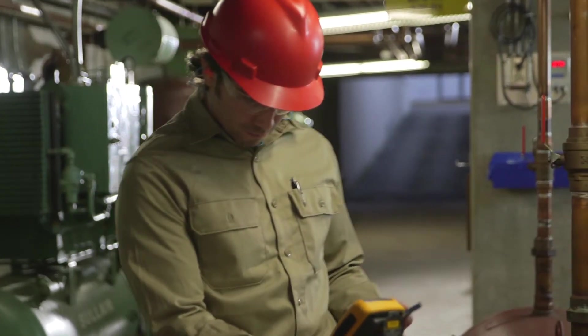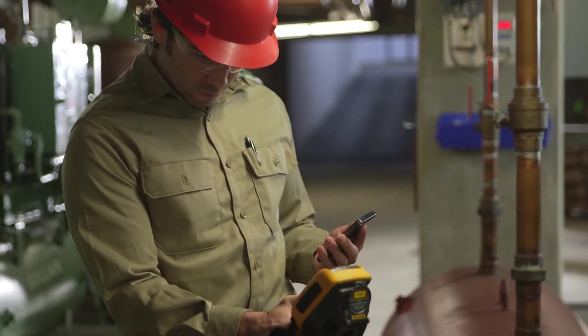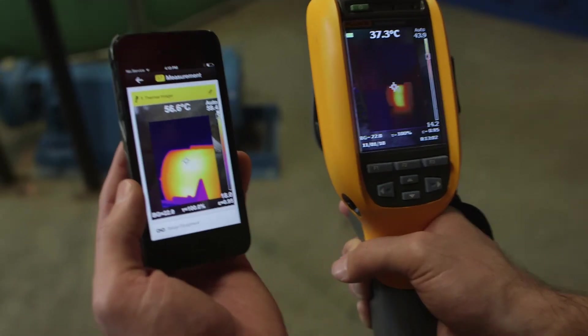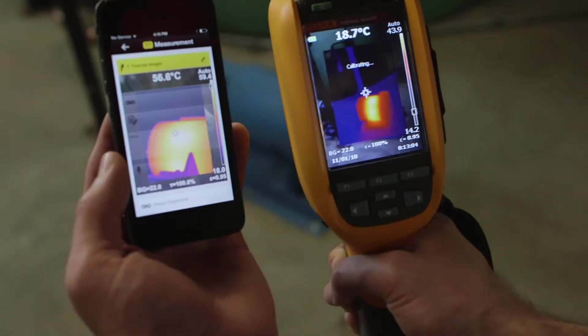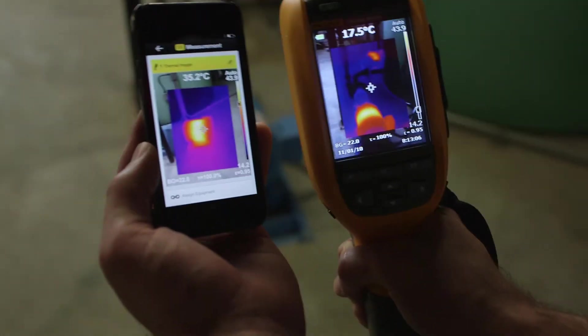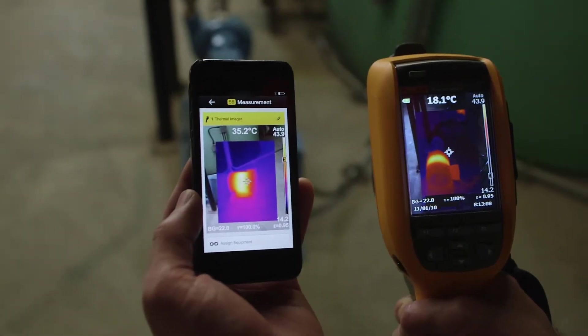Using Fluke Connect for predictive maintenance records is a huge benefit and thermal imaging is used a lot in predictive maintenance. Looking at a history of thermal images can help predict when machines are going to fail.